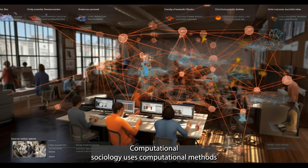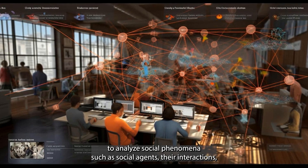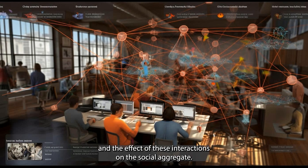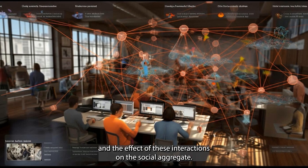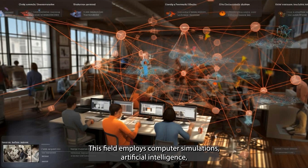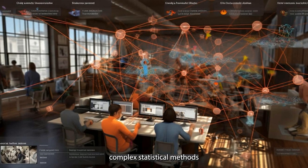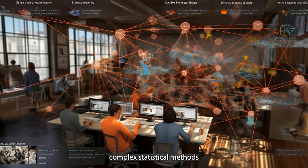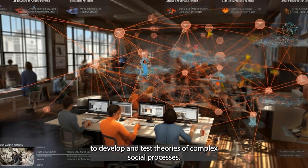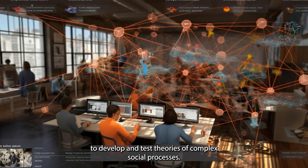Computational sociology uses computational methods to analyze social phenomena such as social agents, their interactions, and the effect of these interactions on the social aggregate. This field employs computer simulations, artificial intelligence, complex statistical methods, and analytic approaches such as social network analysis to develop and test theories of complex social processes.